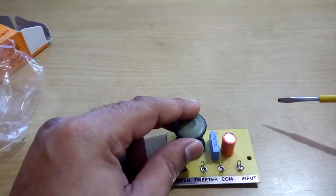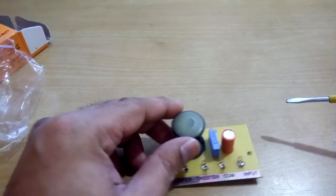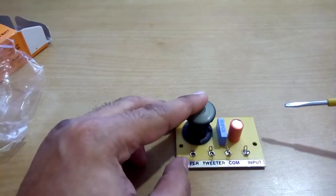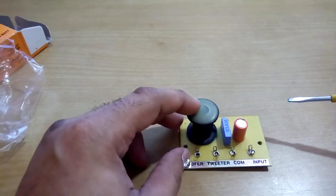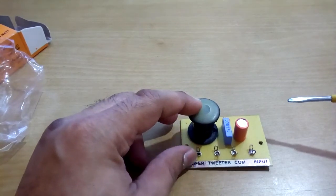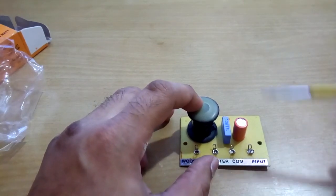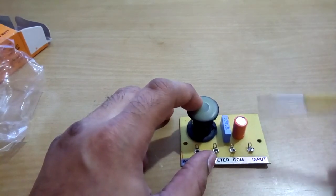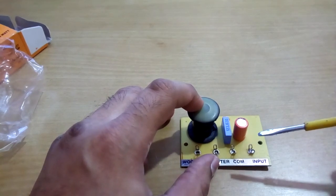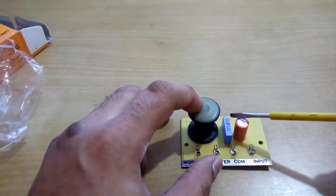This is a two-way crossover. There are three-way crossovers too. There you get woofer for low frequencies and tweeter for high frequencies, and in the three-way you get another connection for mid frequencies. There will be another coil and two more caps like this.